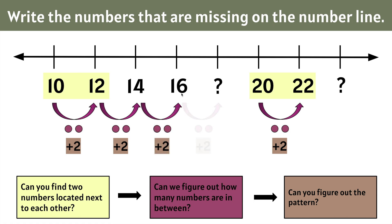Now let's add 2 to 16: 16, 17, 18. This missing number is 18, and we know that 18 plus 2 is 20.